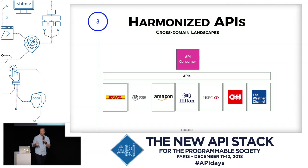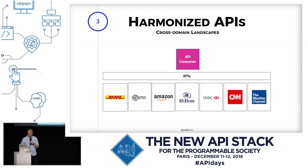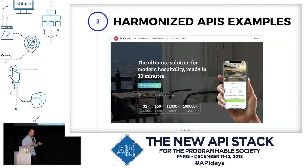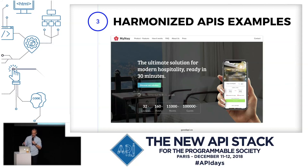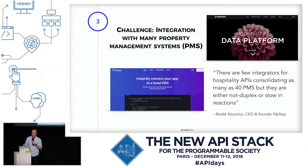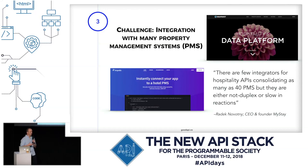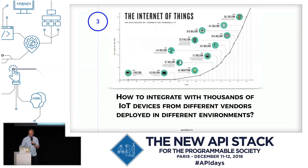There is also a cross-domain landscape where APIs you're interested in come from different domains — logistics, banking, e-commerce, weather, whatever. For example, a friend of mine runs a startup called MyStay. He wants to connect hotel guests with hotels and faces the challenge of multiple property management systems — the systems hotels use to manage their businesses. He would like to connect with all of them, but that's not his business. There are integrators making it easier for him, but even they face challenges.